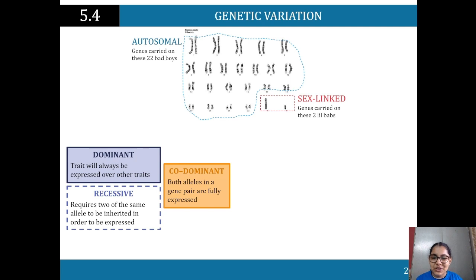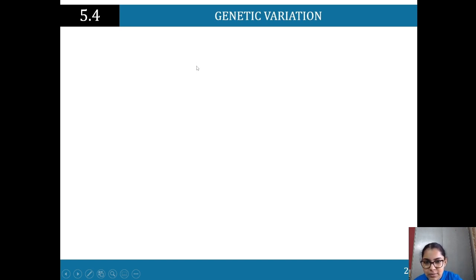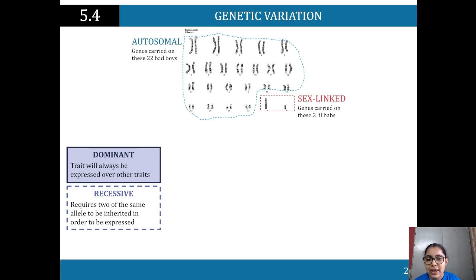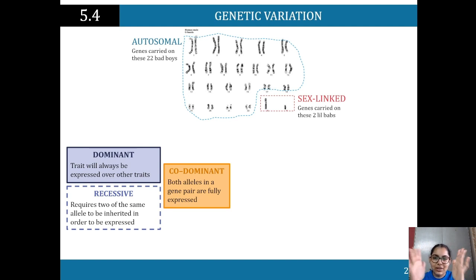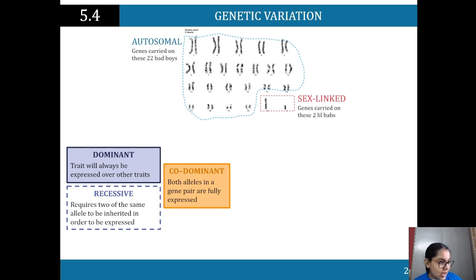Co-dominance is when both alleles in a gene pair are fully expressed. So if I've got an allele for red hair and an allele for black hair on both chromosomes, both are being expressed. An allele is basically that trait present in the genetic material — the DNA. So I've got an allele for black hair on each chromosome.